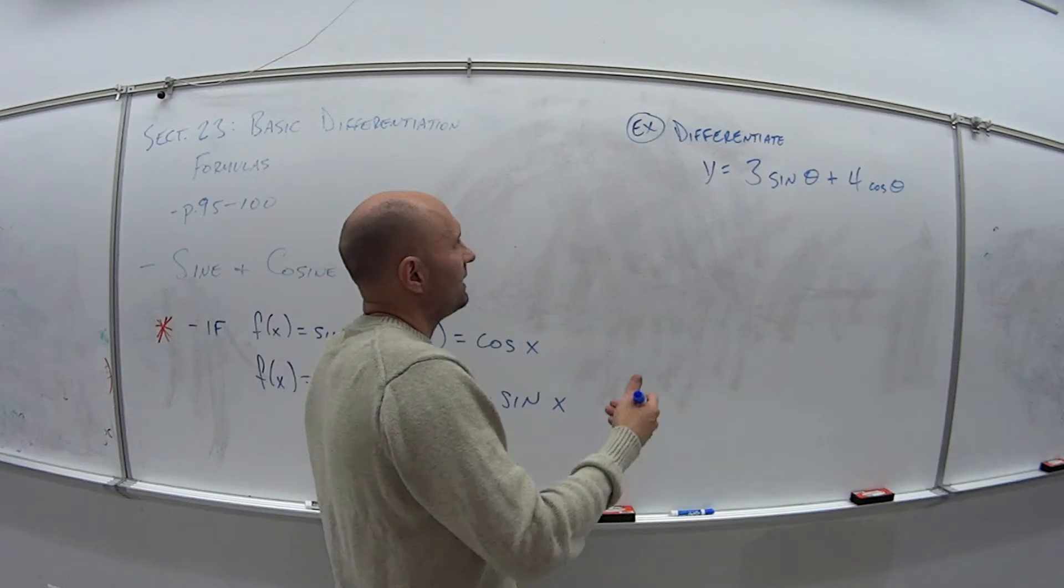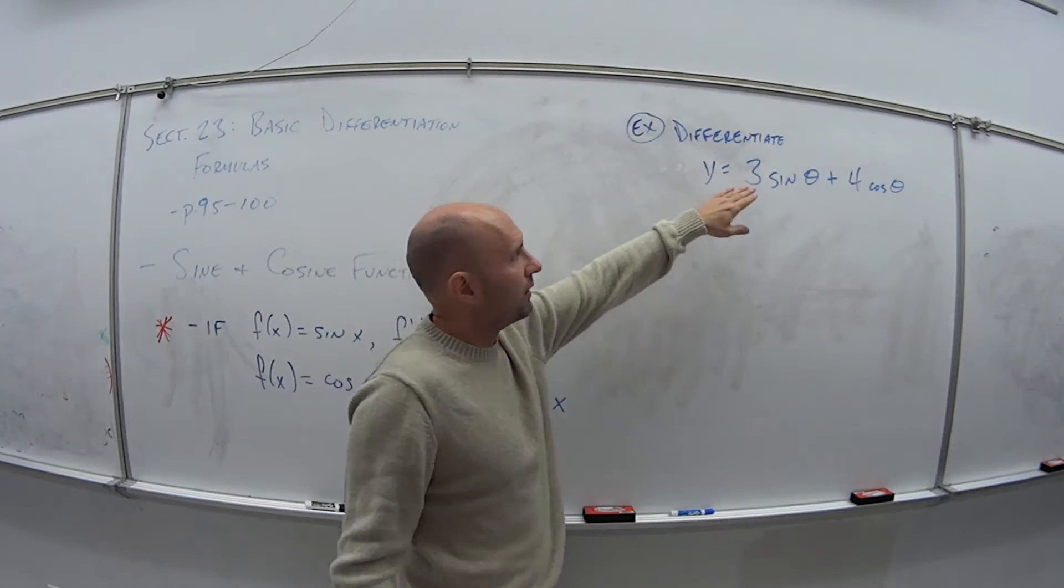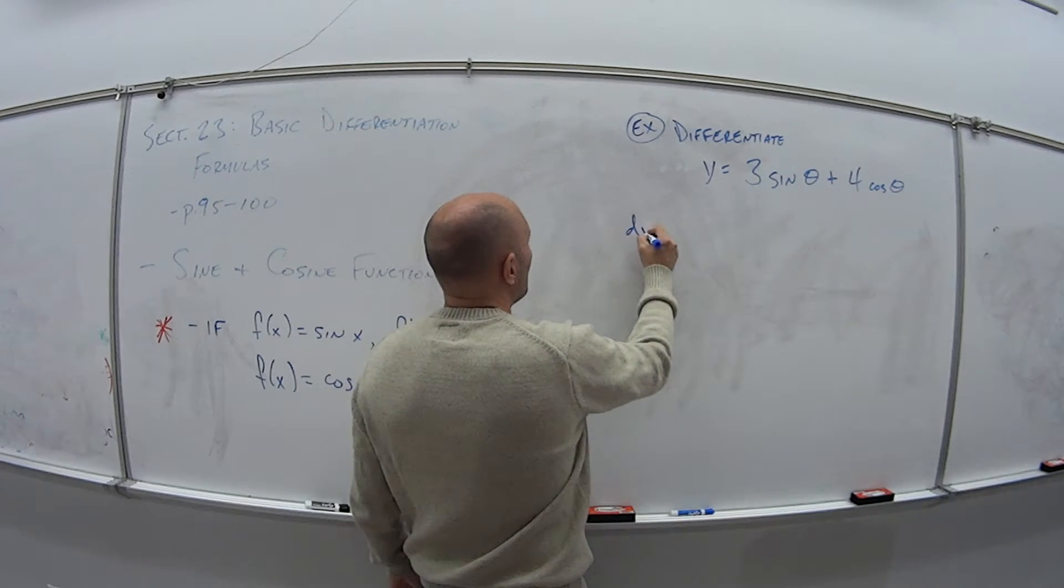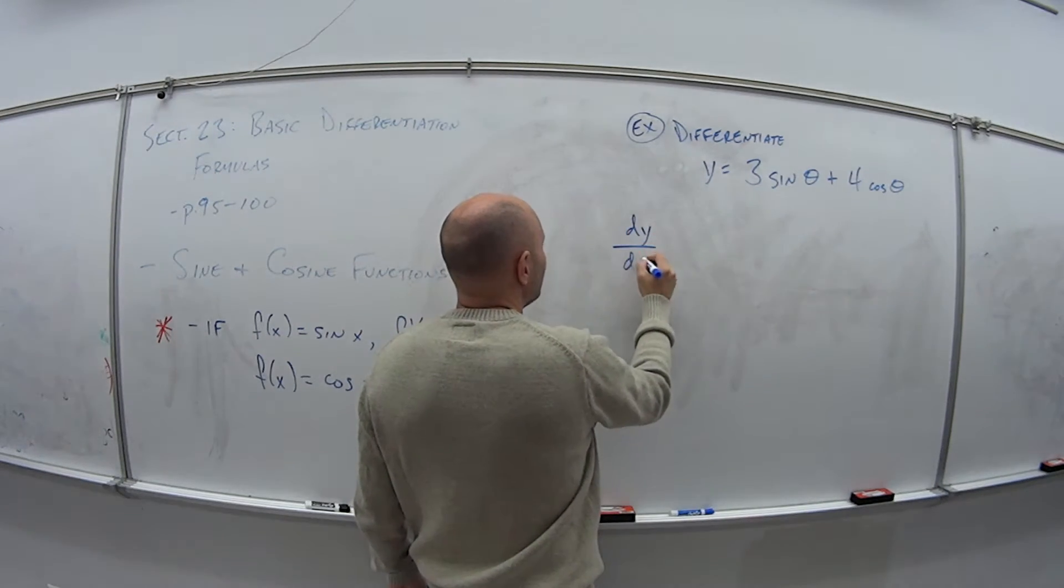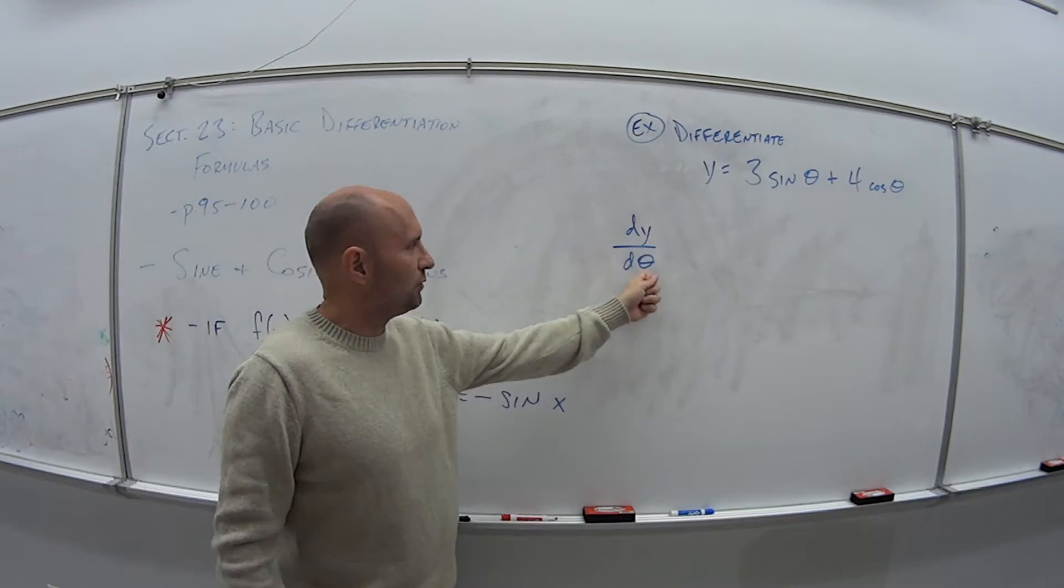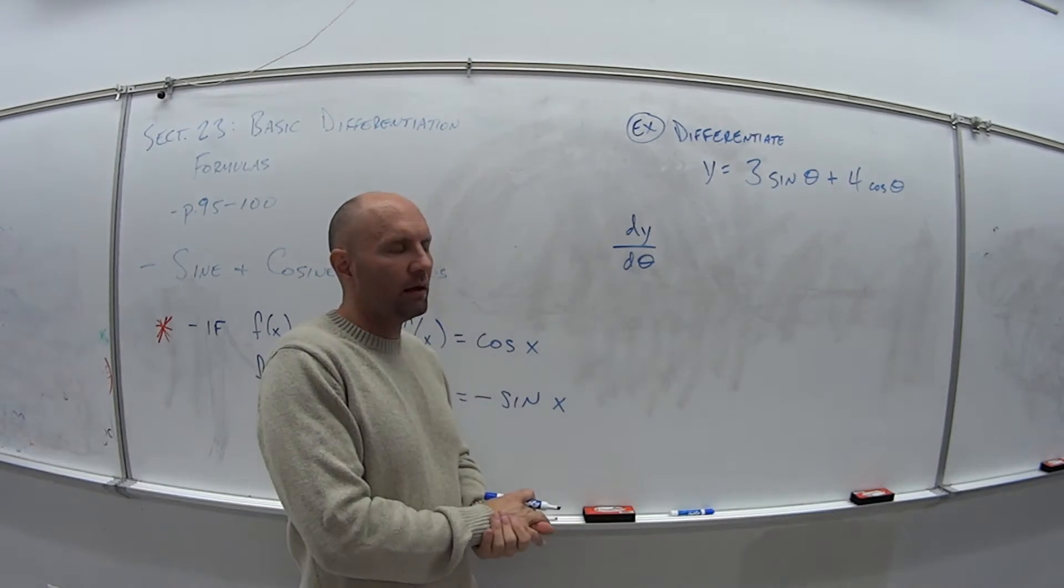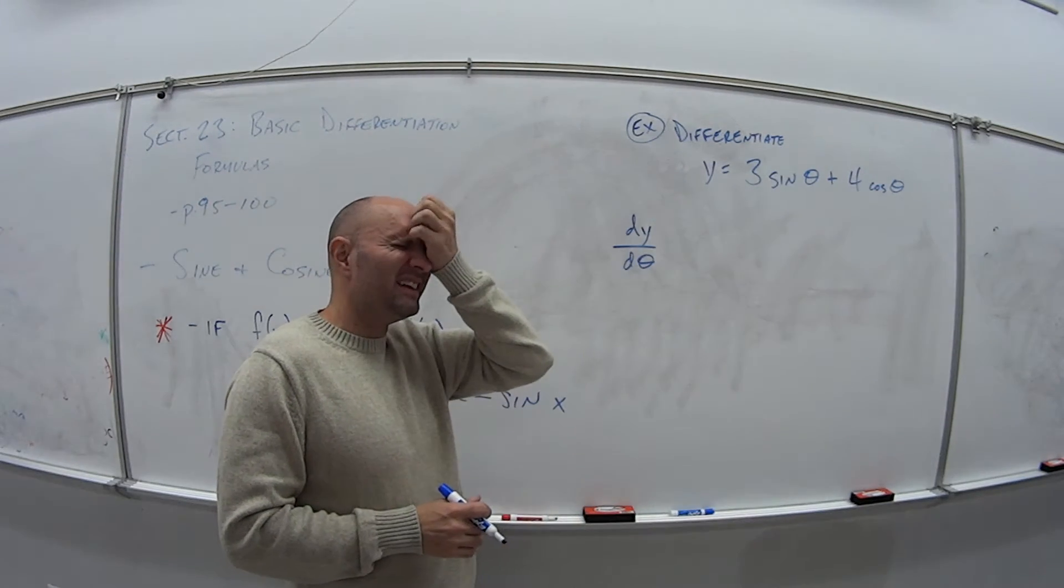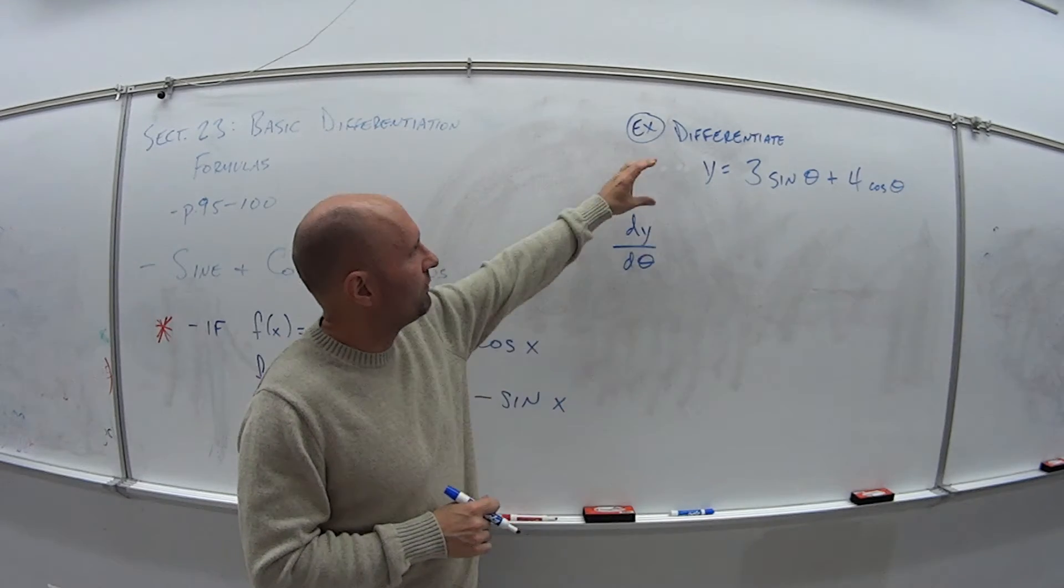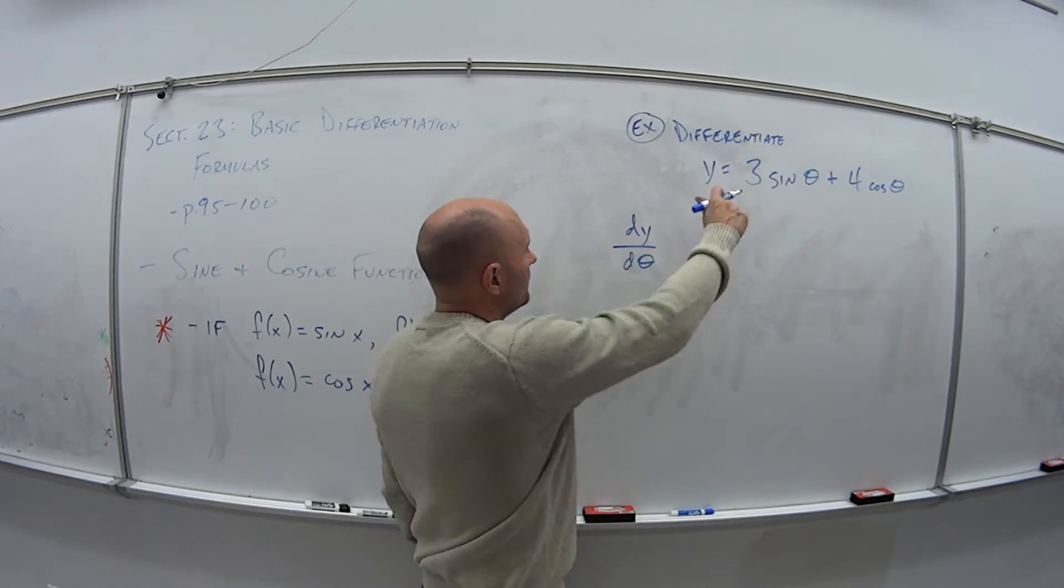So in this case, we're finding the derivative of y with respect to theta. So that means dy/d theta. So if we were taking the derivative with respect to x, this would be an x in the denominator. I just want to use some of this different notation that we were introduced to in section 2.2, I believe. So the derivative of this function y with respect to theta is what?